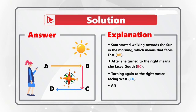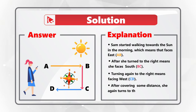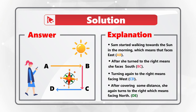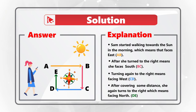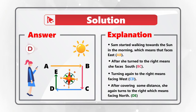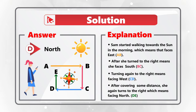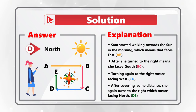Last but not least, after Sam covers more distance, she again turns to the right, which means that now she is facing north, shown by the ray DE. So the correct answer here is choice D, north. Hopefully you've nailed this question and now know how to answer similar problems on the test.